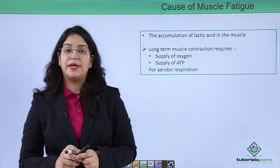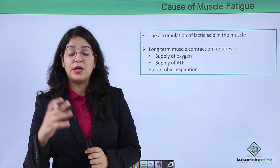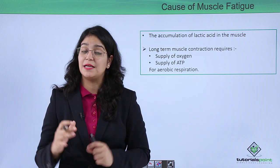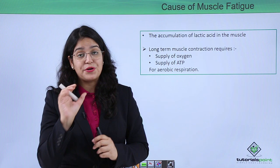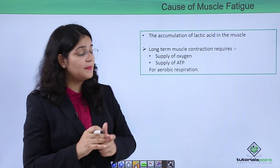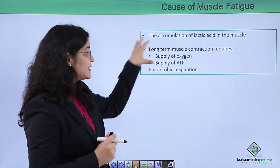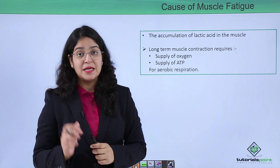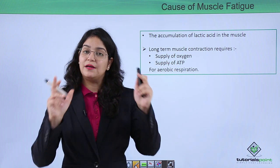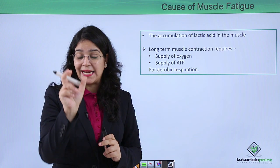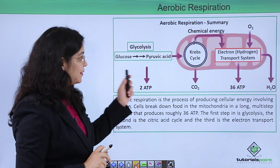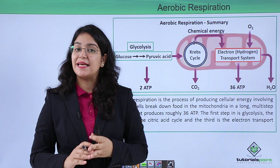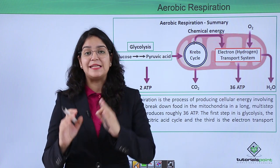When you are doing an exercise or activity that requires continuous muscle work or continuous contraction, your muscles need a great supply of oxygen and ATP. This energy requirement is met by aerobic respiration. Aerobic respiration is the process in which your cells provide energy in the presence of oxygen.